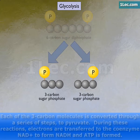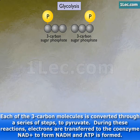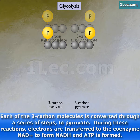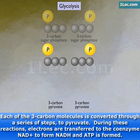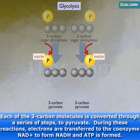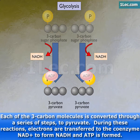Each of the 3-carbon molecules is converted through a series of steps to pyruvate. During these reactions, electrons are transferred to the coenzyme NAD+ to form NADH, and ATP is formed.